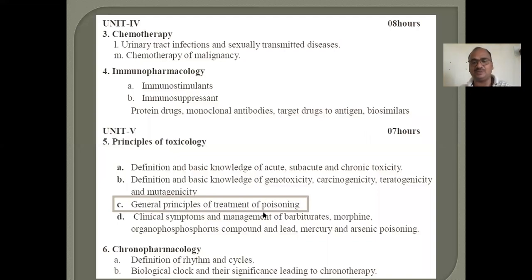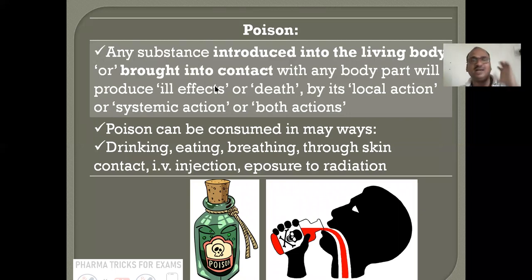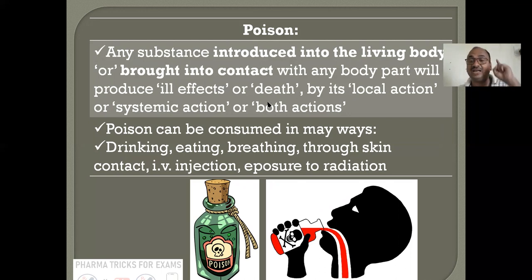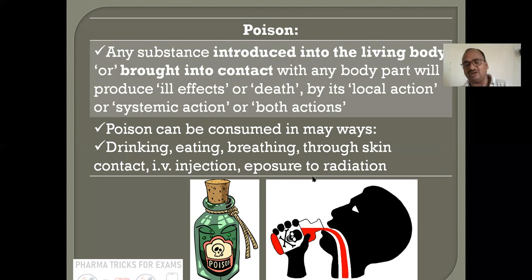Here you can see the general principles of treatment of poisoning in your syllabus. Poison is nothing but any substance — here I have shown the picture of poison. Any substance which is introduced into the living body, not the dead body, or brought into contact with any part of the body, and it will produce ill effects — or it will produce death — by its local action, systemic action, or both. Poison can be consumed in many ways: drinking, eating, breathing of fumes, through skin contact, IV injection, exposure to radiation.